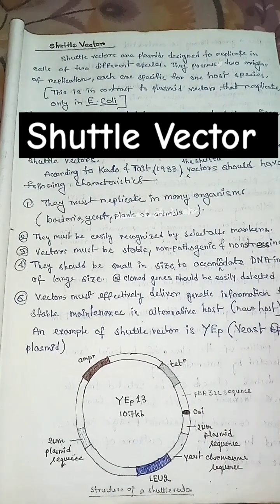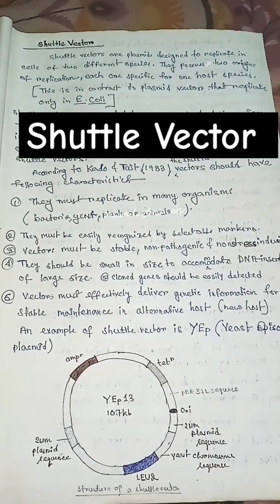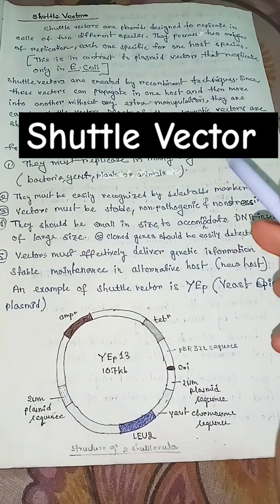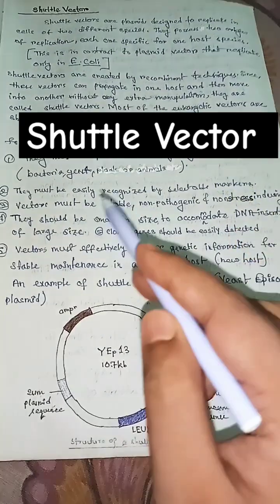Most of the eukaryotic vectors are shuttle vectors. According to Caddo and Tate, the shuttle vectors should have following characteristics.